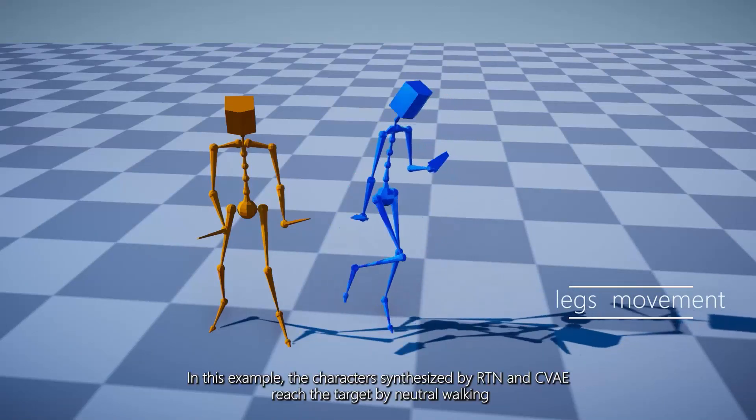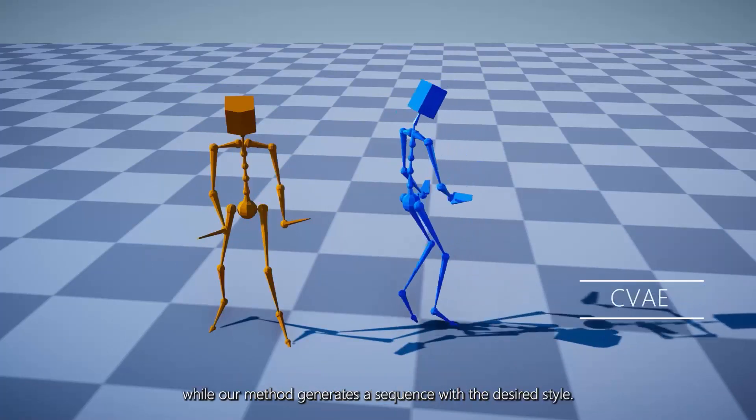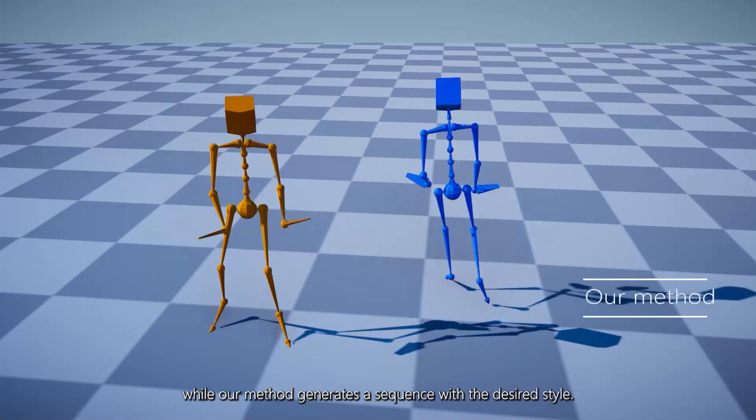In this example, the characters synthesized by RTN and CVAE reach the target by neutral walking while our method generates a sequence with the desired style.